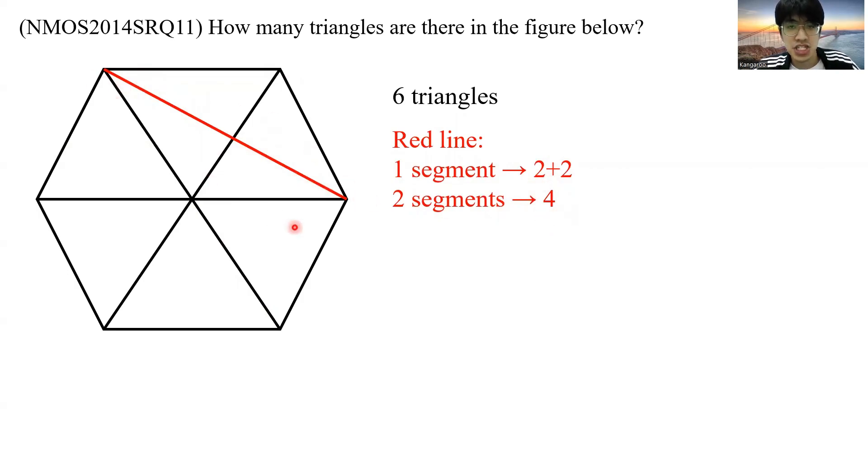But that's just the first line that we just add in. How about we add in another line? So now, let me bring back this blue line over here. Let's see how many new triangles can it form. Again, starting with the first segment, we can have one triangle, two triangles, and three triangles. So we get three triangles from the first segment.